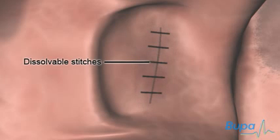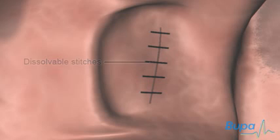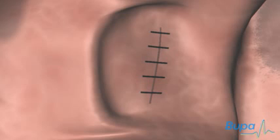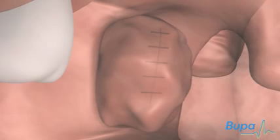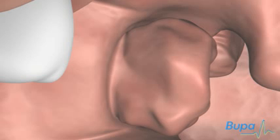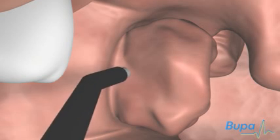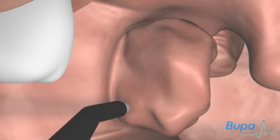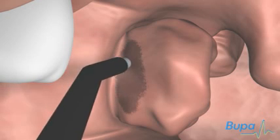Sometimes the surgeon will close the wound and stop the bleeding with dissolvable stitches. Sometimes a heated instrument is used to remove the tonsils and stop the bleeding. This method is called diathermy.